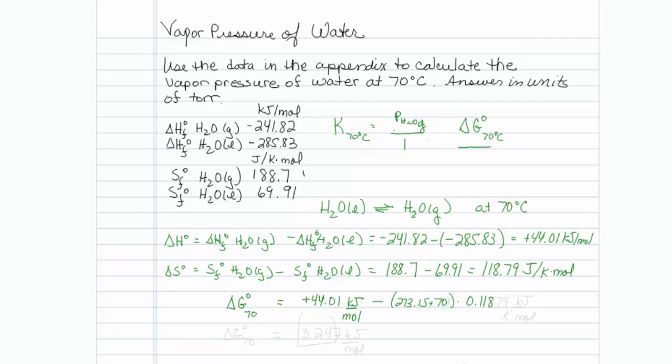And this of course is in Kelvin, so my units will cancel out. Now I can figure out the free energy of standard state at 70 degrees Celsius. So my free energy at 70 degrees turns out to be 3.247 kilojoules per mole.